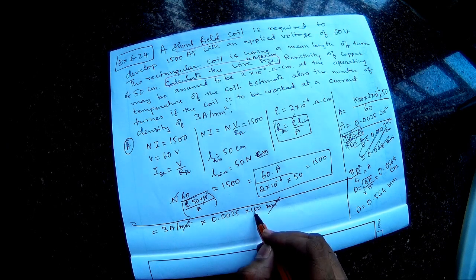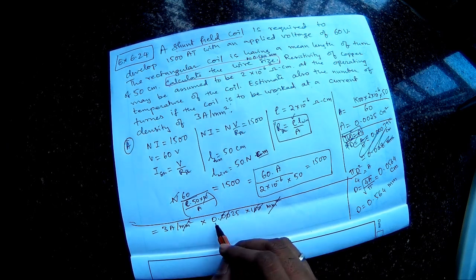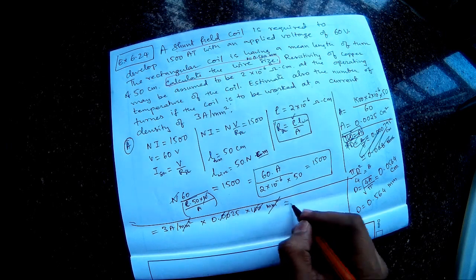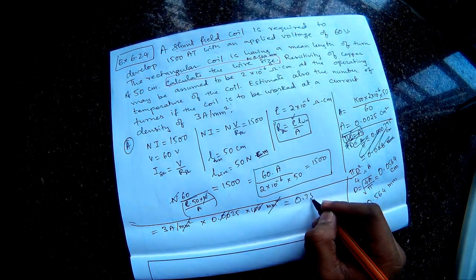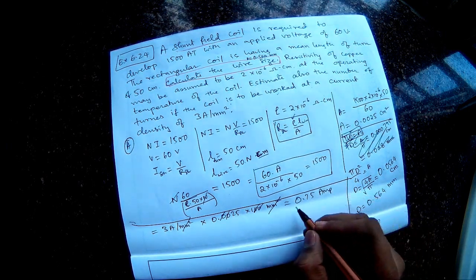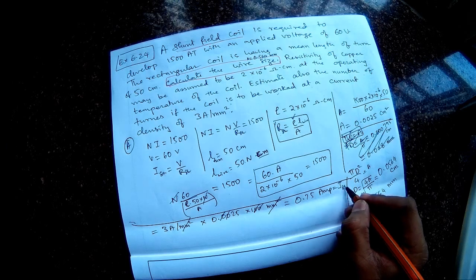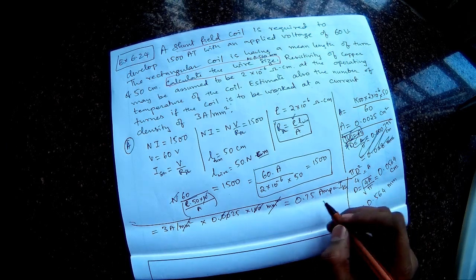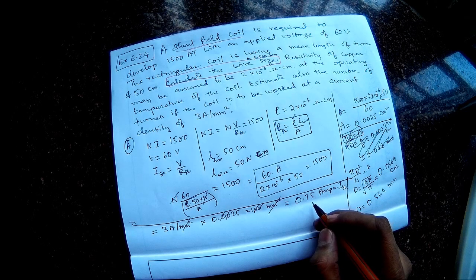So 0.25 into 3, that is 0.75 amperes. So this is the actual current in the shent field wire.